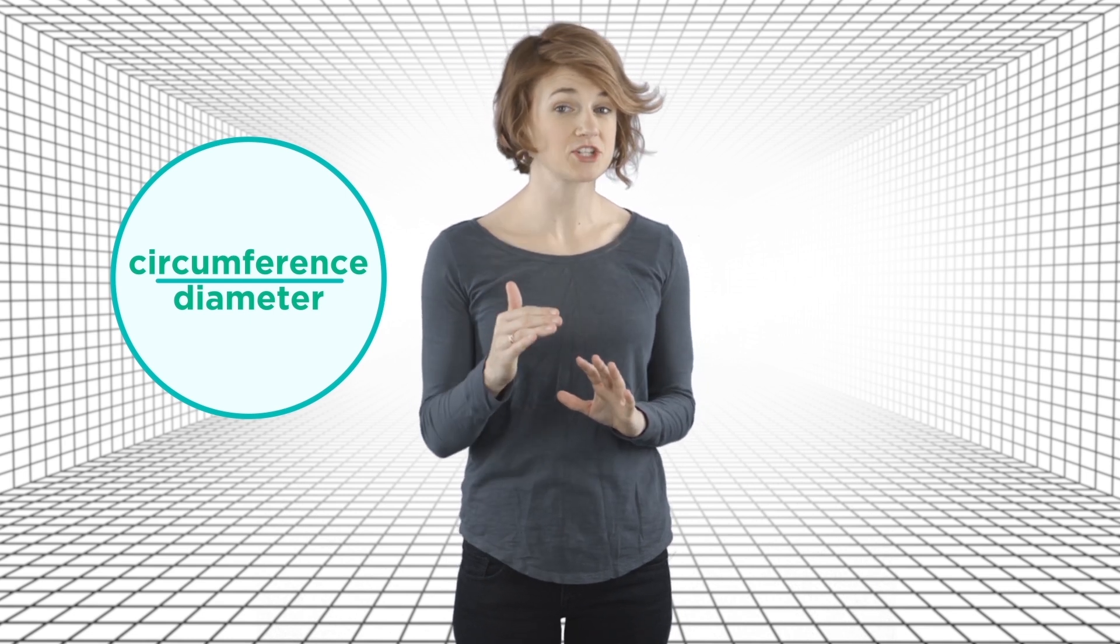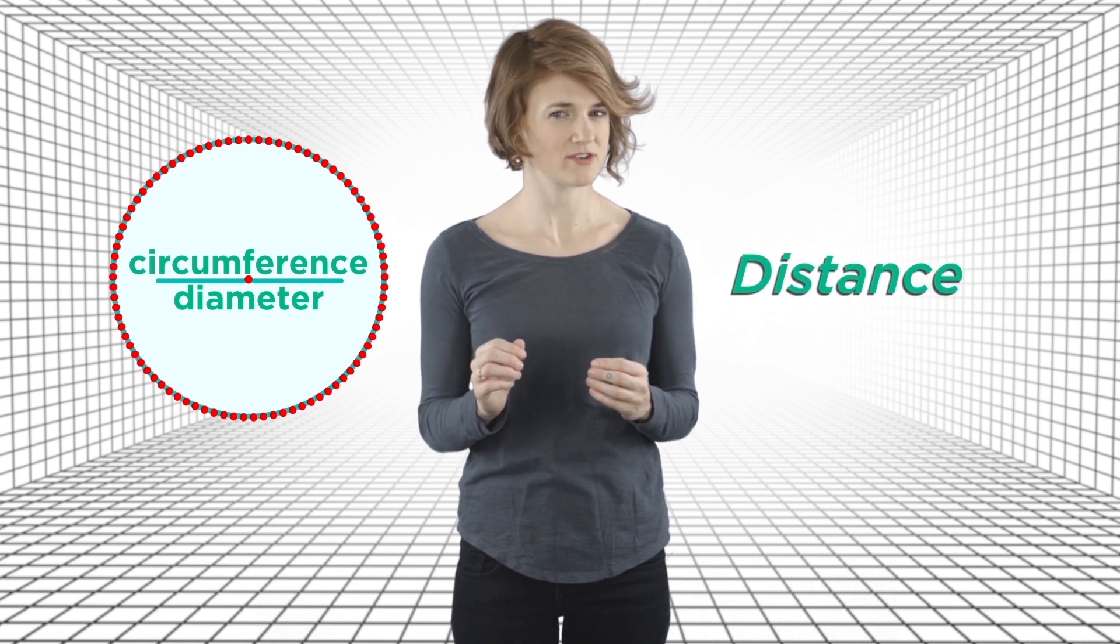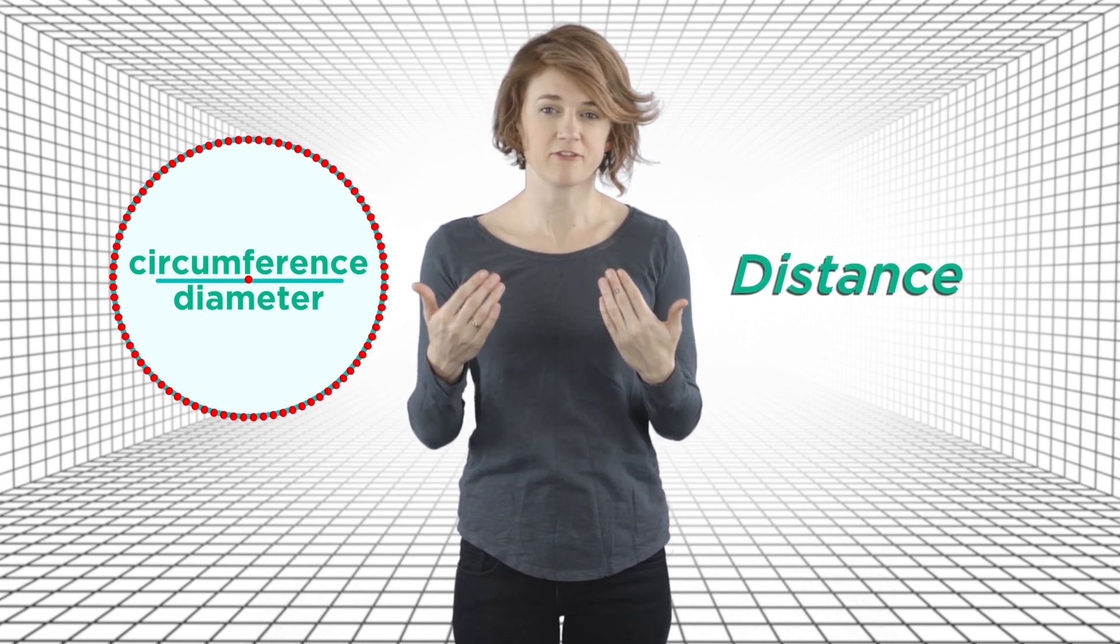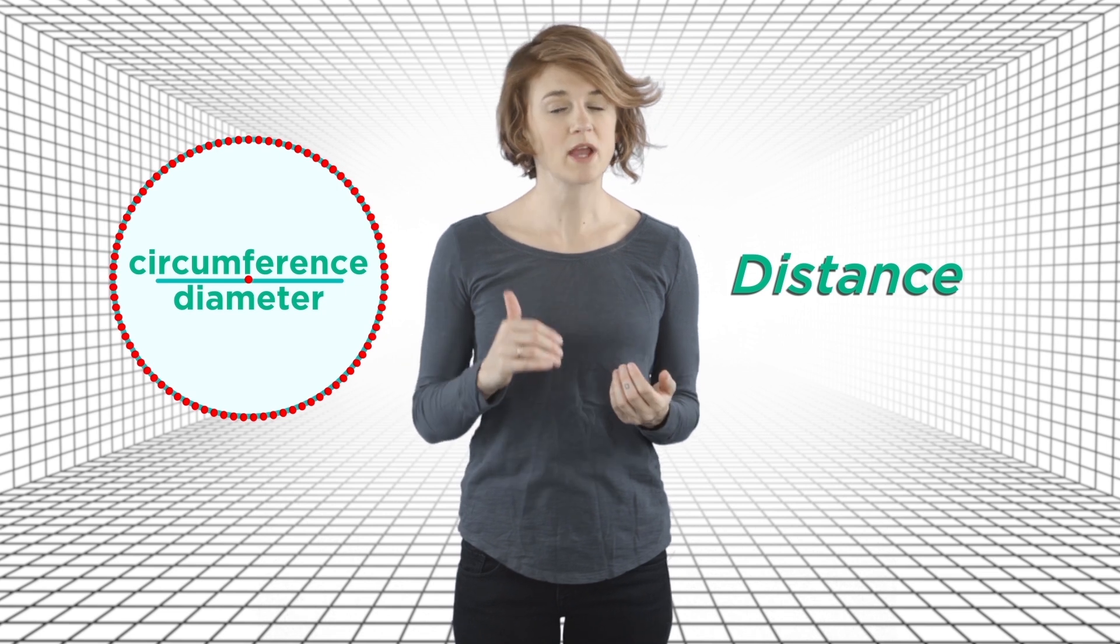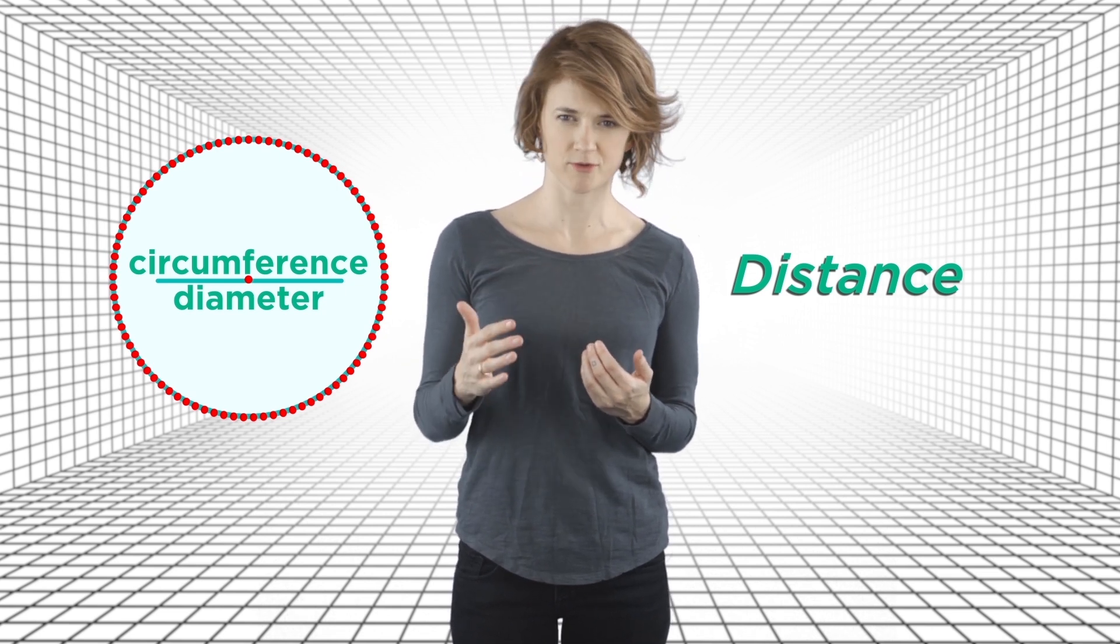A circle, by definition, is all the points that are a fixed distance away from a central point. This is why distance matters. Since distance is in the definition of a circle, the way we measure distance affects the shape and circumference of the circle. And the circumference of the circle affects pi.